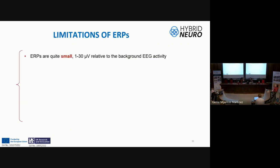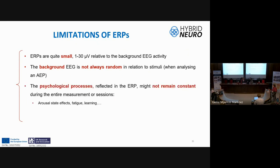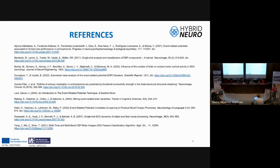Some limitations to bear in mind: ERPs are quite small in amplitude. If we only perform average potential analysis, we discard background activity, assuming it is random and unrelated to the stimulus, but in some cases it could be relevant. Psychological processes may not remain constant during the entire experiment — in long experiments subjects become fatigued. Additionally, there is substantial individual variability; ERPs may vary largely between subjects in latency or amplitude. References used during the presentation are available via the QR code.